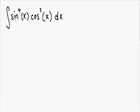Take a look at this example and notice how there is an exponent on top of both trig functions. This is what a typical example looks like where you need to use trig identities. The idea is that you want to look for the trig function with the odd exponent.